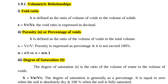First we are going to see void ratio. Void ratio E is defined as the ratio of volume of voids to the volume of solids. The formula for void ratio is E equal to Vv divided by Vs. Generally the void ratio E is expressed in terms of decimal.